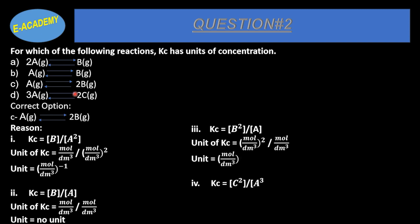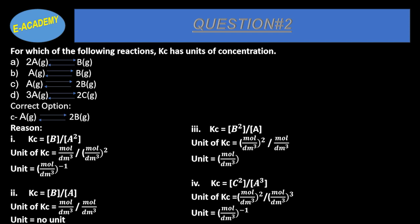For Reaction D: 3A → 2B, KC = [B]²/[A]³ = (mol/dm³)² / (mol/dm³)³ = mol⁻¹dm³. So Reaction C is the correct answer because its KC has units of mol/dm³.